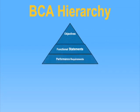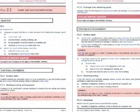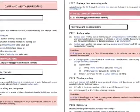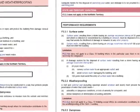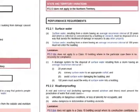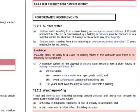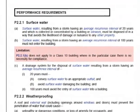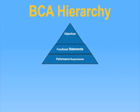Level 3 is the performance requirements themselves. These are the requirements which state the level of performance which a building solution must meet. The performance requirements outline the suitable level of performance which must be met by building materials and components, design factors, and construction methods, in order to meet the relevant functional statements and in turn the relevant objectives.